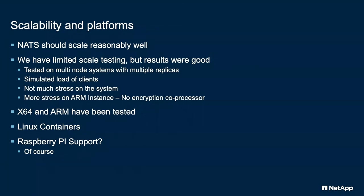This was all fronted by a basic AWS load balancer. We've tested on X64 and ARM. Linux containers is how we ship it, and that's really the only way we've tested it — other than popping it on a Raspberry Pi to make sure it works there, because of course we have to make sure it works on a Raspberry Pi.